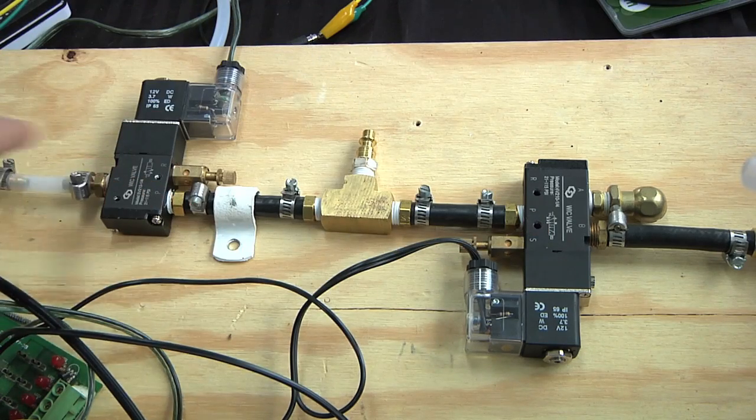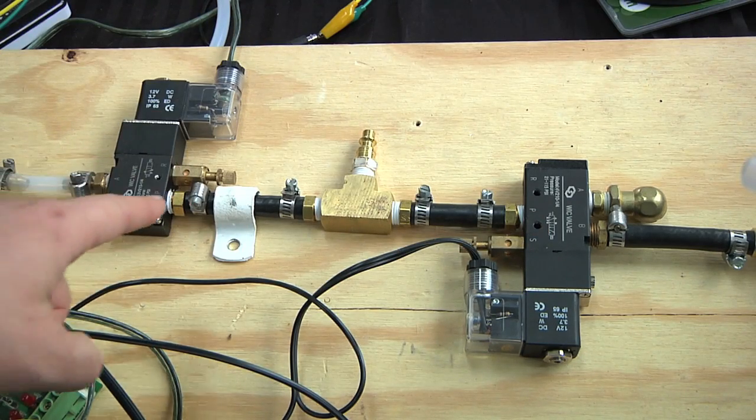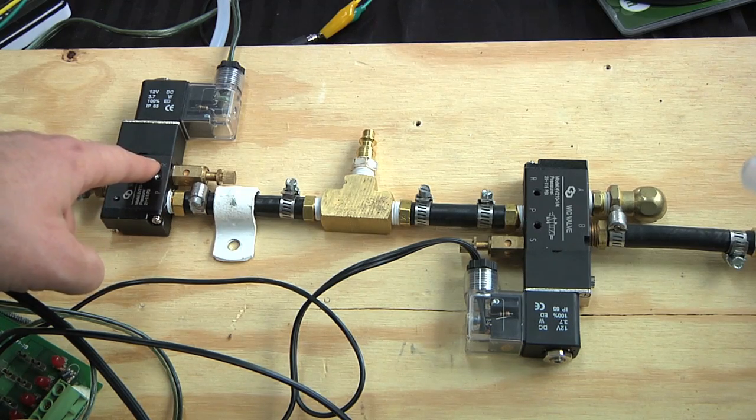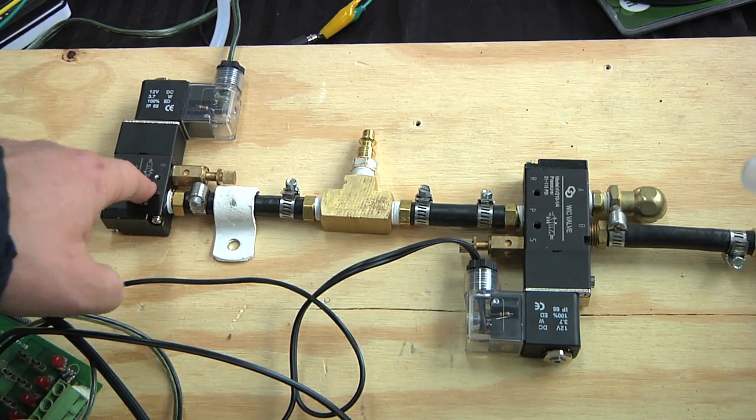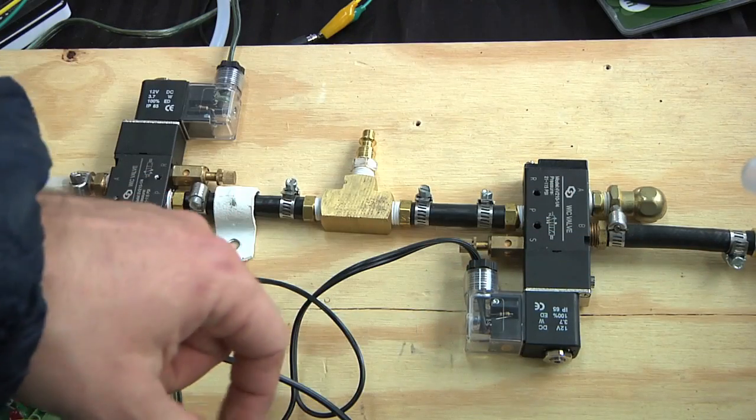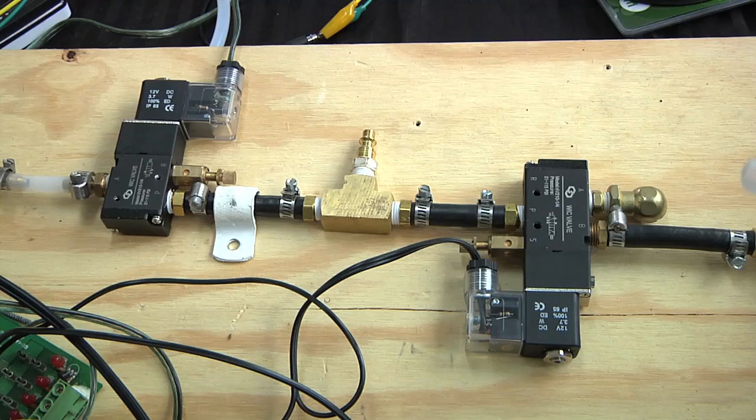So over here after this, I also have another T. So this can go to both of the air cylinders and open them simultaneously. Likewise, over here, that goes out to a T. Each end of that goes to the ends of the air cylinder to close the air cylinder.